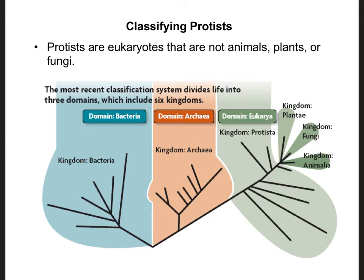Just so you can see how diverse Kingdom Protista is, look at the area that Kingdom Protista takes up relative to Kingdom Animalia. There are 8.7 million different species of animals on Earth, and those 8.7 million species are all found within that little bubble right there. So you can see that Kingdom Protista is going to be our most diverse kingdom, and it takes up a really large area on our overall phylogenetic tree.